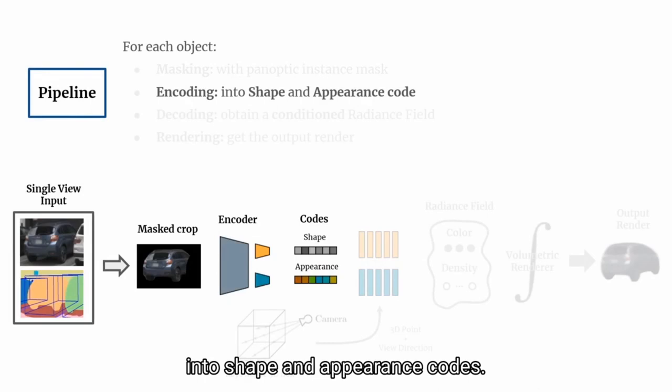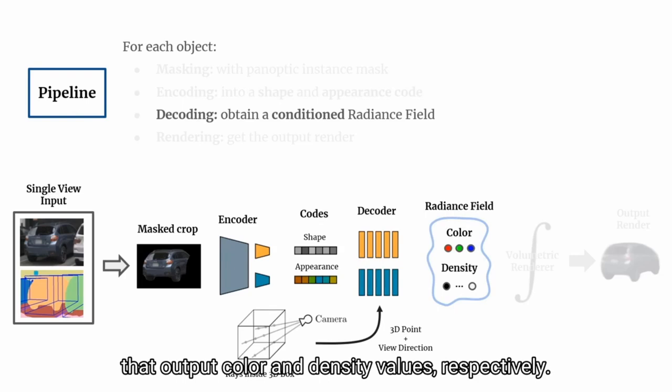For each object, we first crop and mask the input image and encode the object into shape and appearance codes. These codes condition a neural radiance field represented by two separate MLPs that output color and density values respectively.